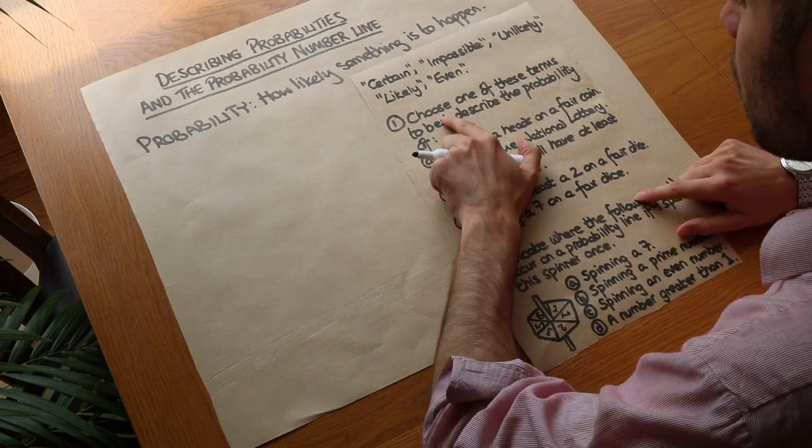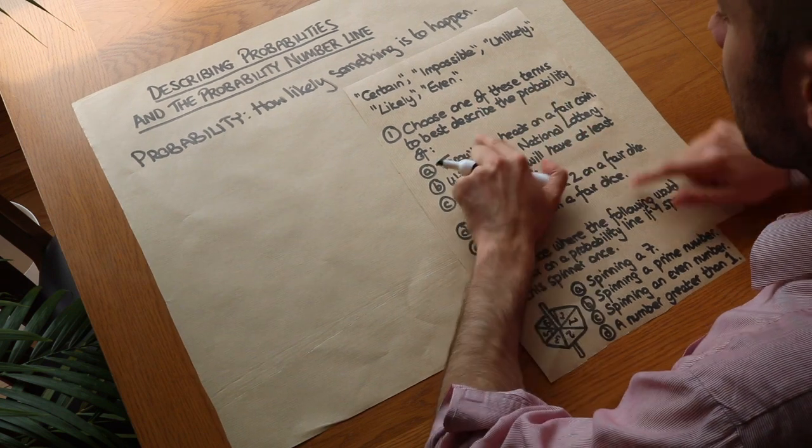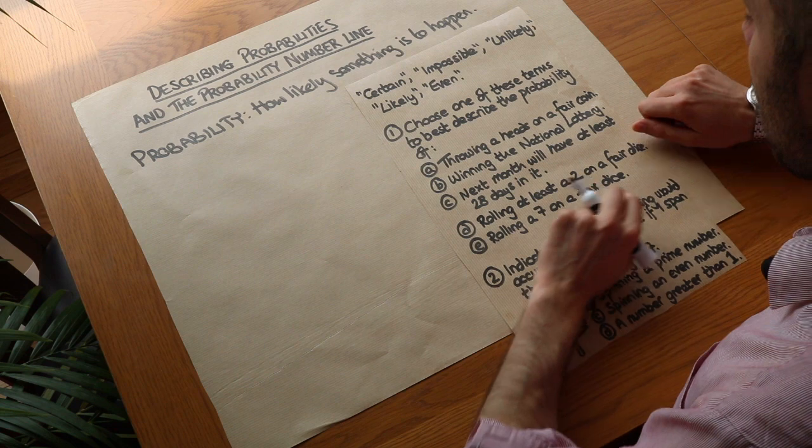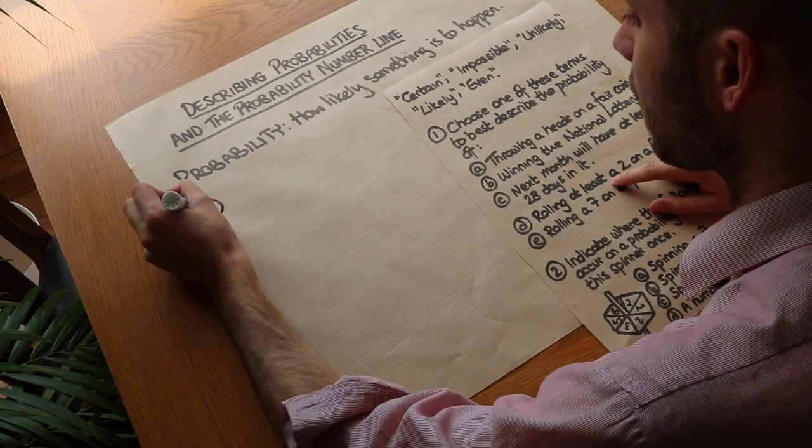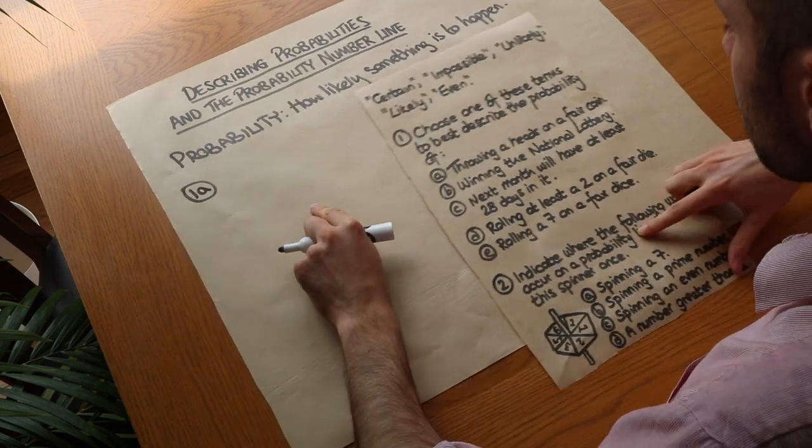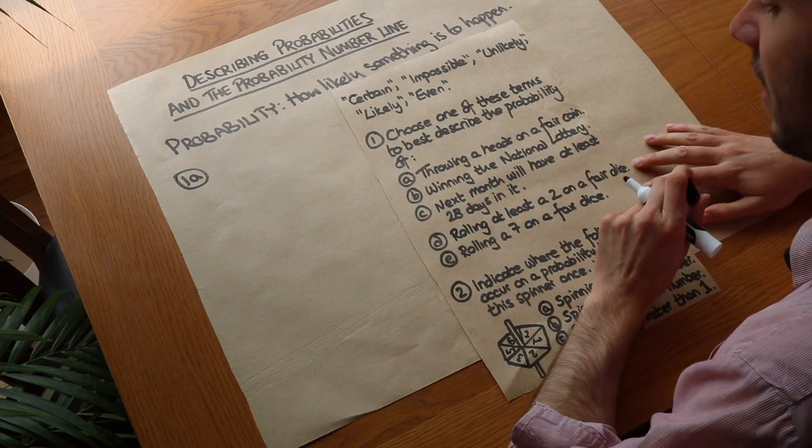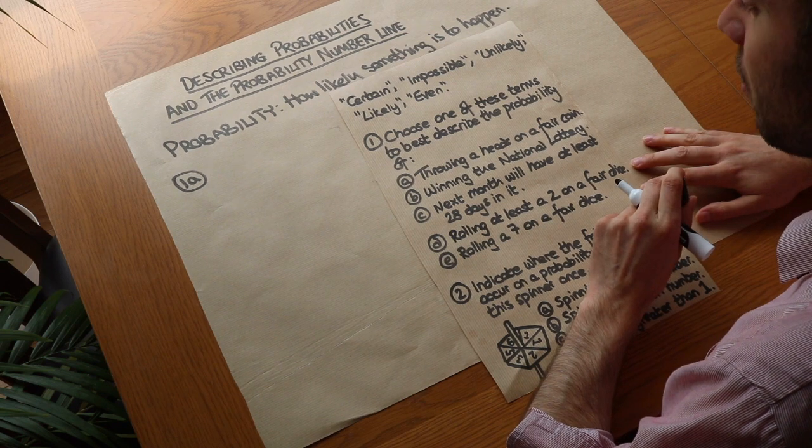Let's take this example here. We want to choose one of these terms to best describe the probability of throwing a head on a fair coin. So let's think about this. Well if you think about it, if you have a fair coin, you're equally likely to get a head as you are to get a tails.